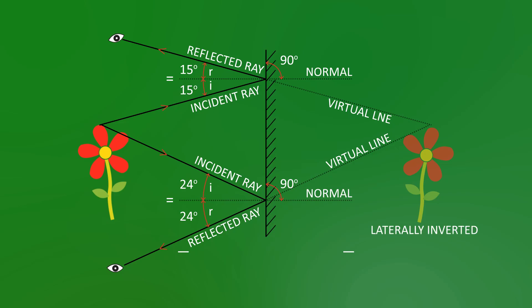Also, the image is the same distance from the mirror as the flower is. So what we say is object distance equals image distance. And that is how you find an image in a plain mirror.